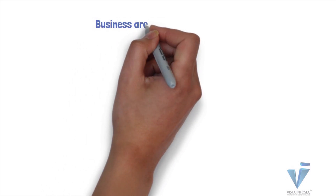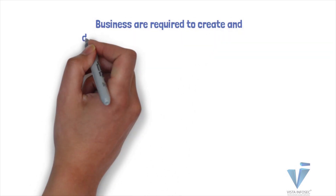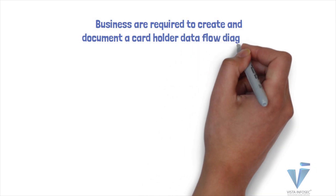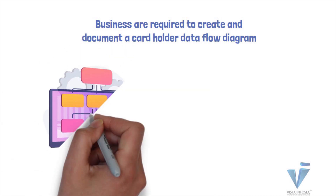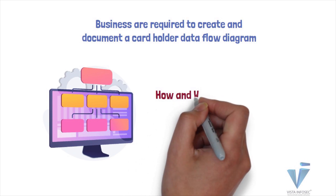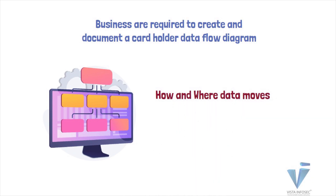Further, businesses are required to create and document a cardholder data flow diagram for all the card data that flows within the organization. A cardholder data flow diagram is basically a graphical representation of how and where the card data moves through the organization. As you define your environment, it is also important to ask all the departments if they receive any kind of cardholder information, and the same needs to be documented to see if it has any impact on the outlined card data flow.